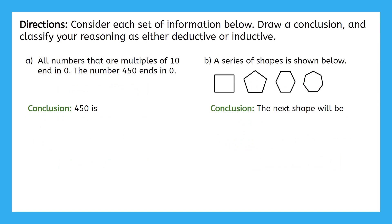We have one last problem to complete together — this one kicks it up a notch. Our directions tell us to consider each set of information below, draw a conclusion, and classify your reasoning as either deductive or inductive. This time we don't have a conclusion; we have to make one. Part A tells us that all numbers that are multiples of 10 end in zero, and 450 ends in zero. The conclusion is that 450 is a multiple of 10. I can conclude that because it ends in zero and we were told that all multiples of 10 end in zero. Since our conclusion comes from facts, we used deductive reasoning.